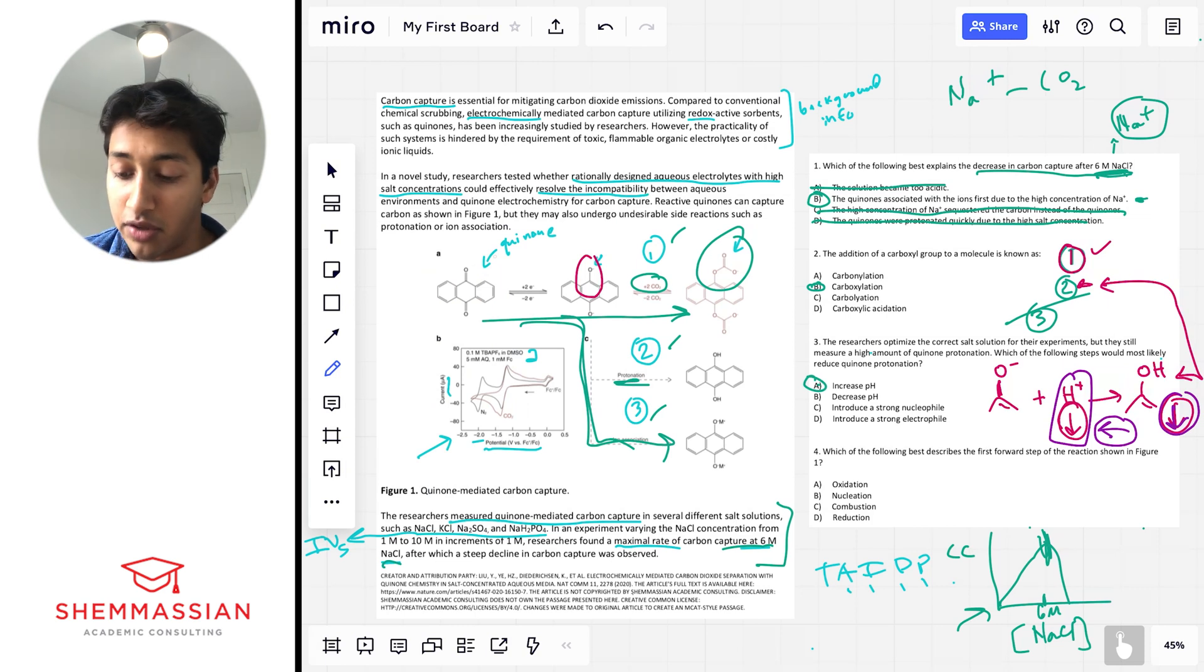And finally, let's go to question four. Which of the following best describes the first forward step of the reaction shown in figure one? And this is actually a step I had us pause and think about a little bit. And we're adding two electrons to the quinone. And so what is this going to be? This is going to be reduction.